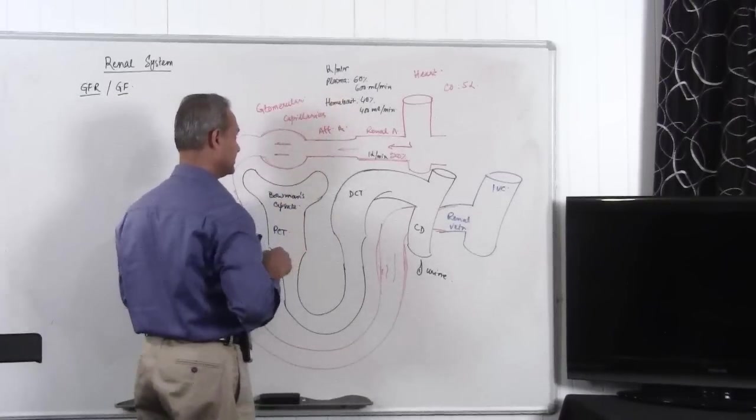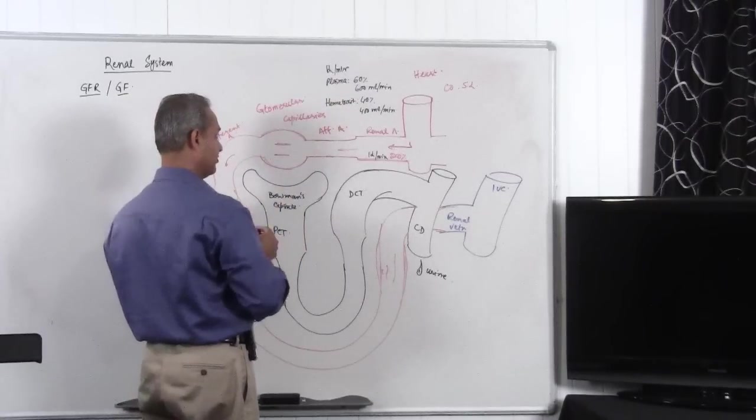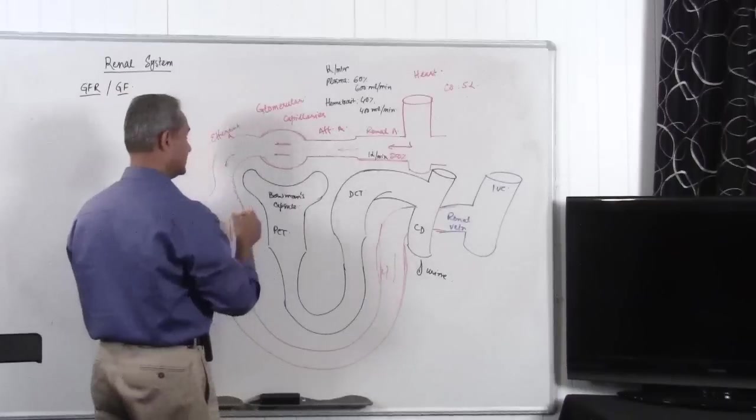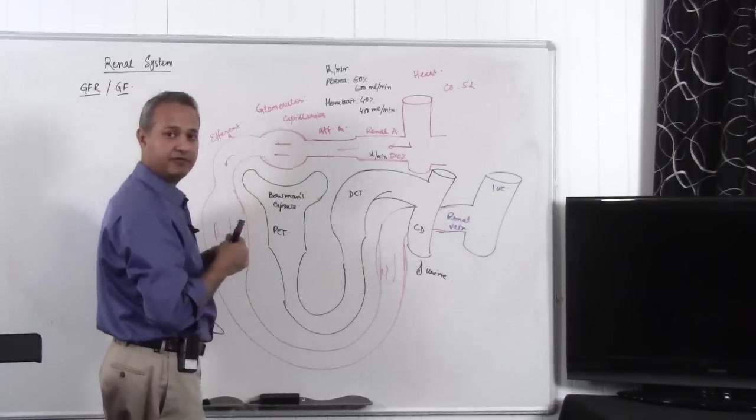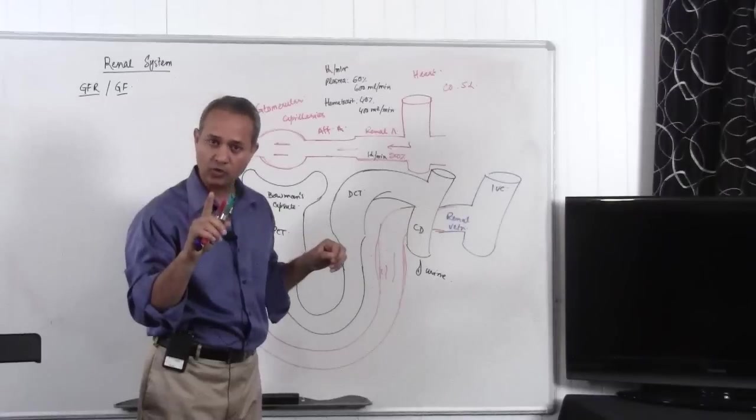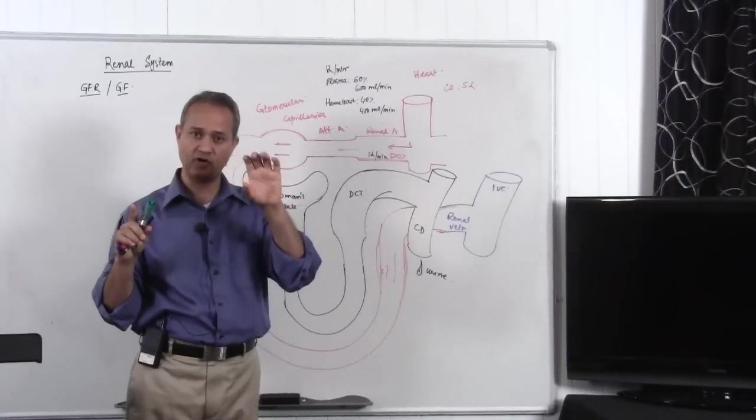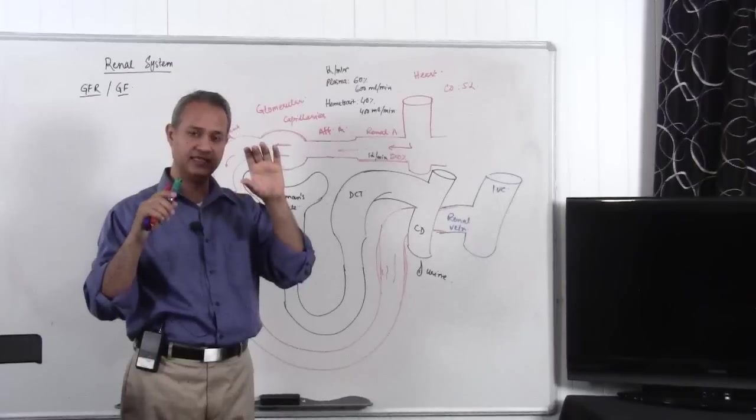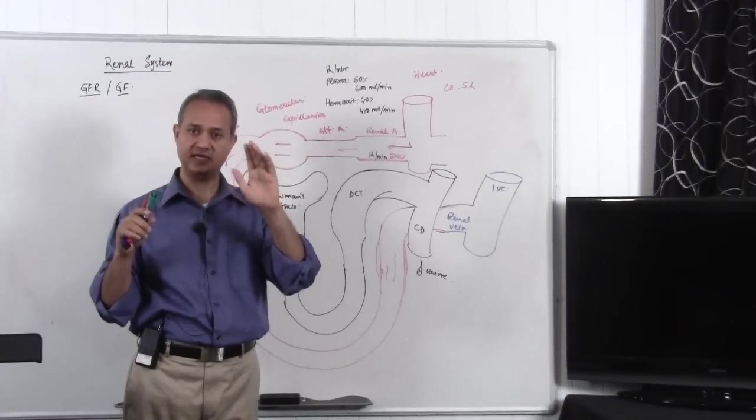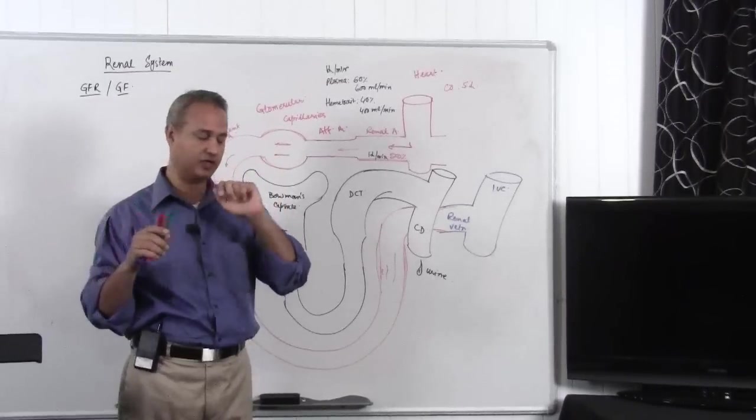Let's talk about the plasma, 600 milliliter of the plasma. That plasma, 600 milliliter enters the afferent arterioles. Afferent arterioles are arterioles. That means they have smooth muscle walls, smooth muscles in their wall and these smooth muscles can contract and they can change the diameter of the arterioles.